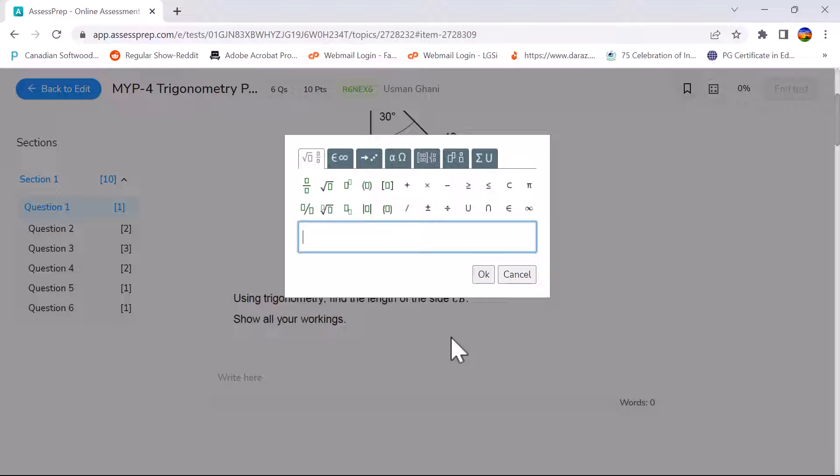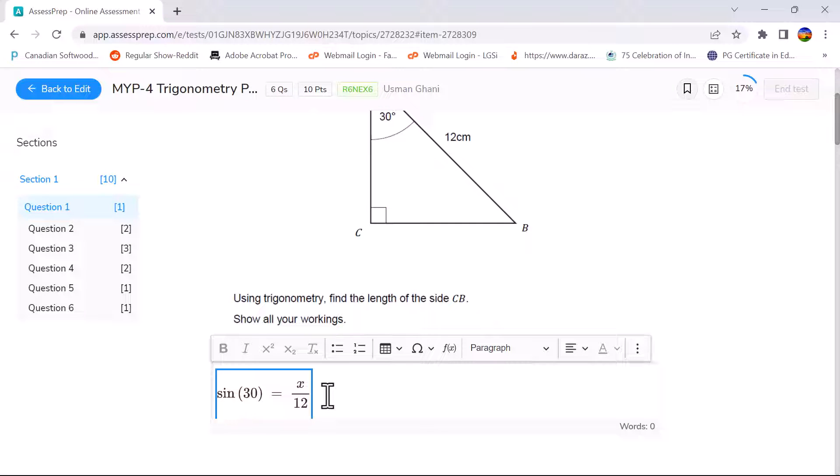Here whatever you type will be inserted in the text window in the proper format. Let's see, our equation was sine of 30 and you insert brackets is equal to. Now I need a fraction so I'll press this button over here, it has inserted a fraction and this is going to be X over 12. If I press ok this is going to copy paste it in the text box in the correct format.